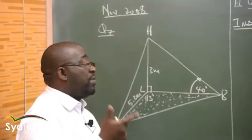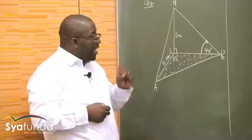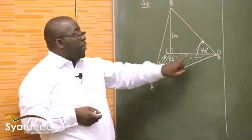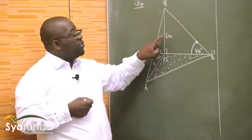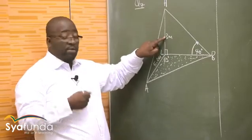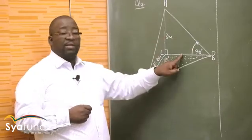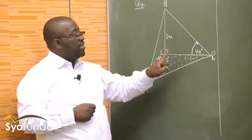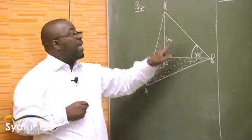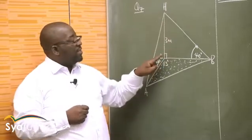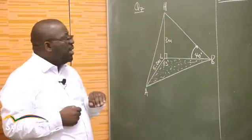Most cases, where you are going to be using the trig ratios, the marks will be lesser than where you use the triangle formulae — that's the sine rule, the cosine rule, and the area rule when you are required to find the area. Let's look at what we have. We do have this angle. What else do we have? We do have the opposite side in this triangle.